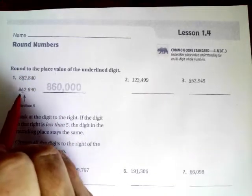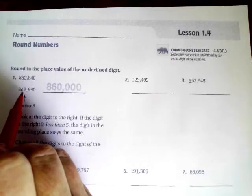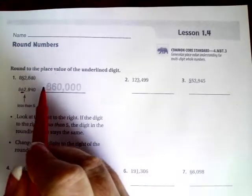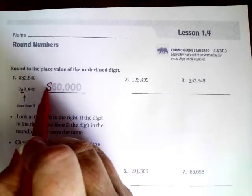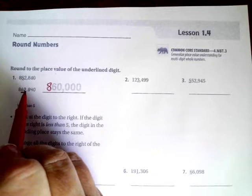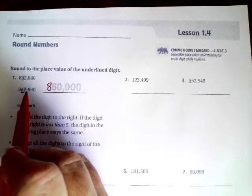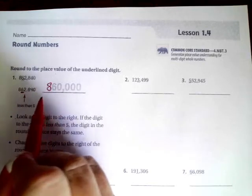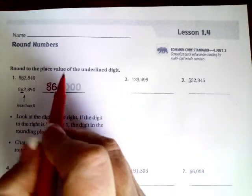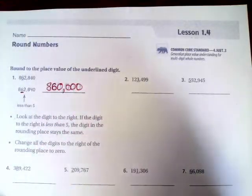So as you can see, on number 1, they wanted the number rounded to the 6, which is the underlined number here. So what they did is they kept the 8 — the 8 doesn't go anywhere. Then they look at the number next to it, and if that number is smaller than a 5 — so a 0, 1, 2, 3, or 4 — then the 6 is going to stay the same. Well, the number is a 2, so it did stay the same. And then everything afterwards becomes a 0.